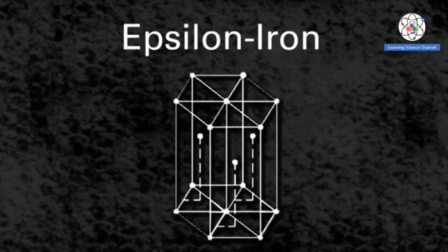At very high pressures, another allotrope of iron is formed, with a hexagonal close-packed structure.